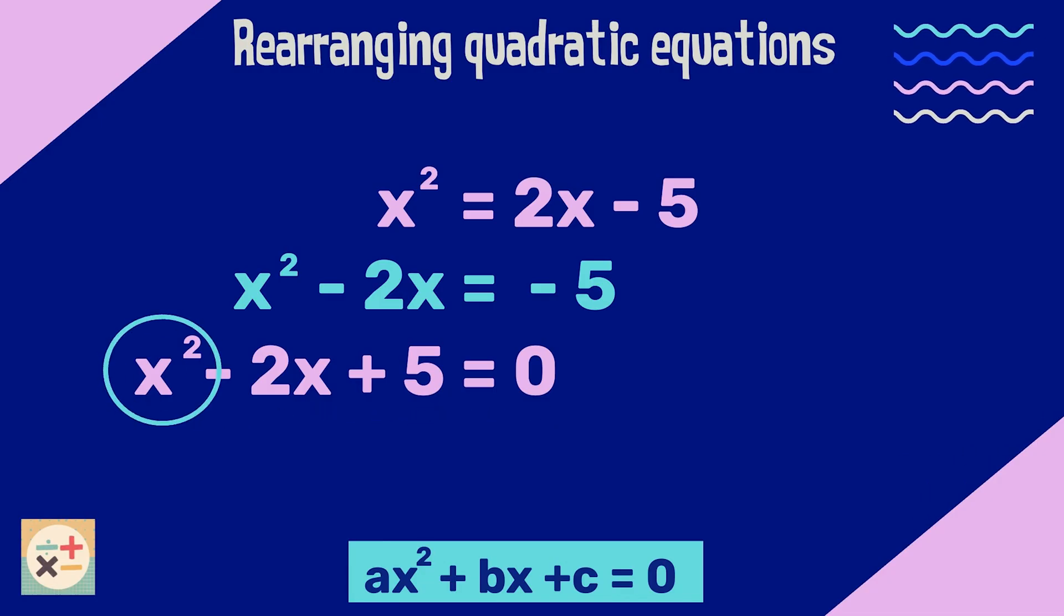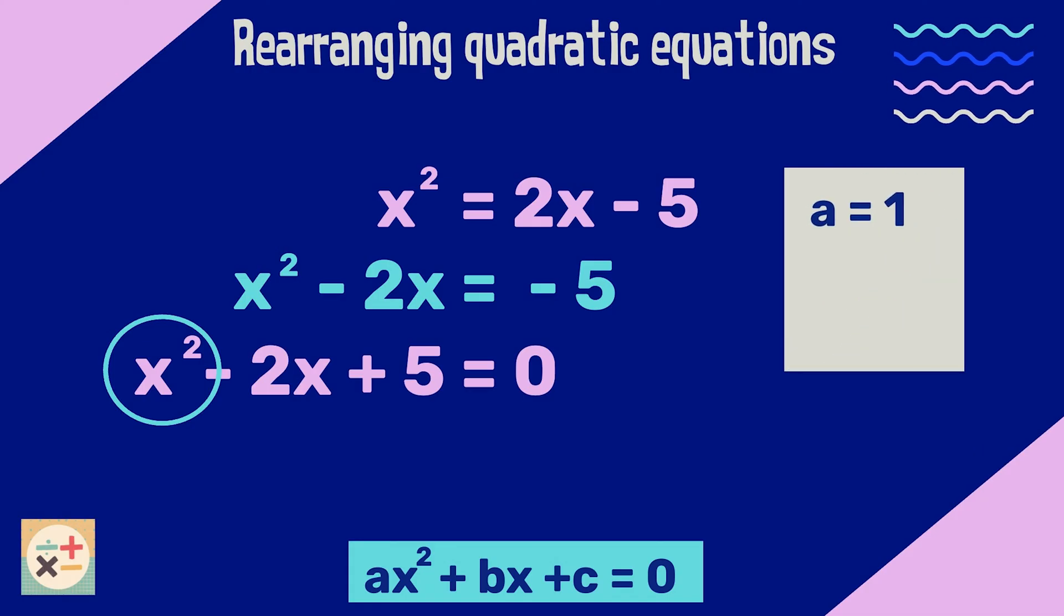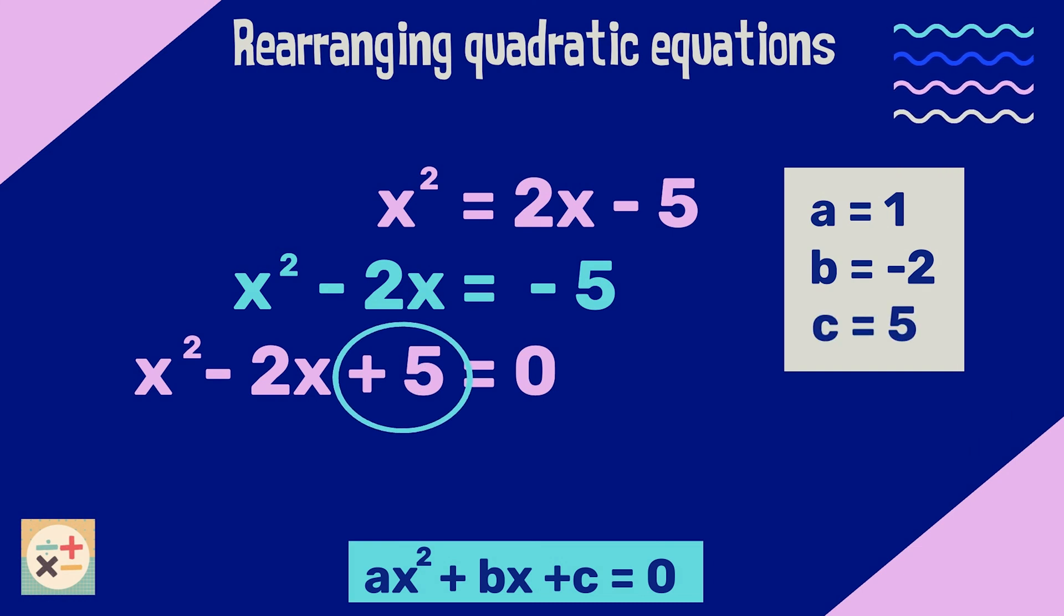a is the coefficient of the squared term. However, there is no number here, meaning the coefficient is simply 1. b is the coefficient of the term that has not been squared. In this case b is minus 2. Finally, c is the constant term, with no variable, 5.